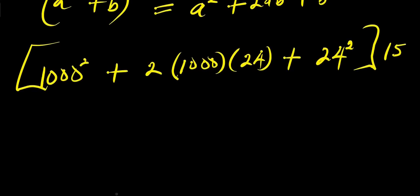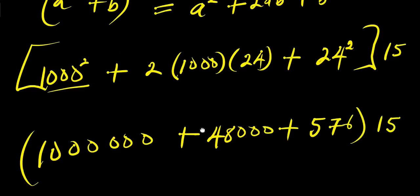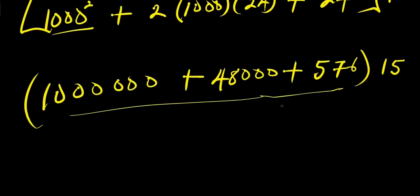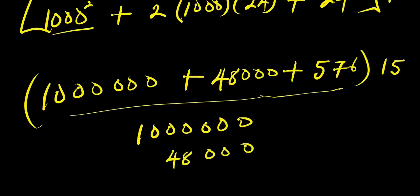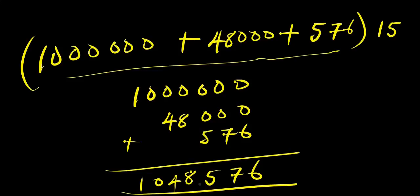Expanding: 1000 squared equals 1,000,000. Plus 2 times 1000 times 24 equals 48,000. Plus 24 squared equals 576. Adding everything together: 1,000,000 plus 48,000 plus 576 equals 1,048,576. We now multiply this by 15 to get the final answer.